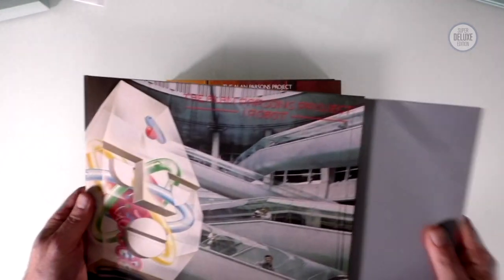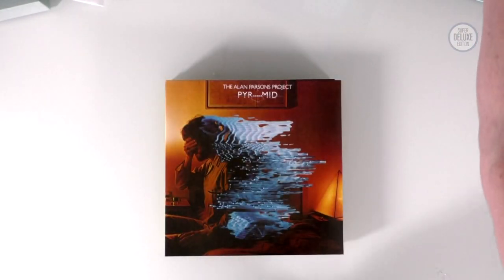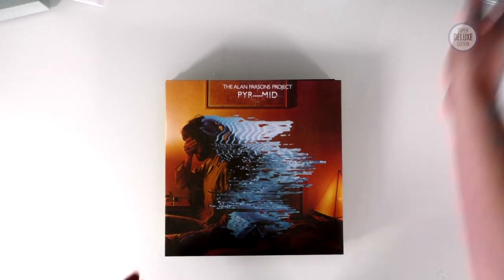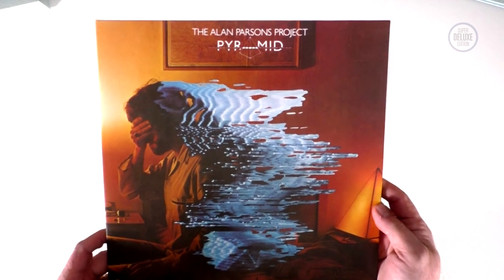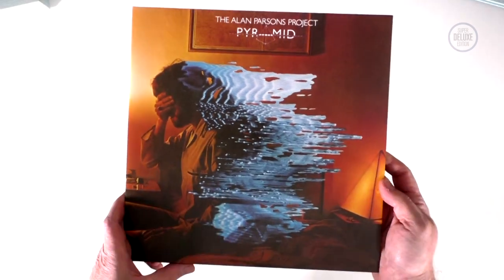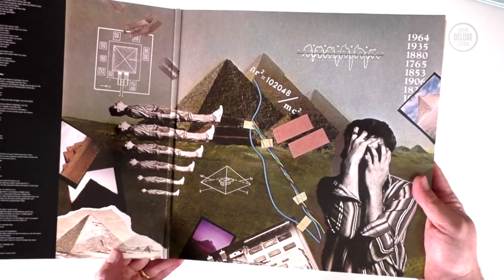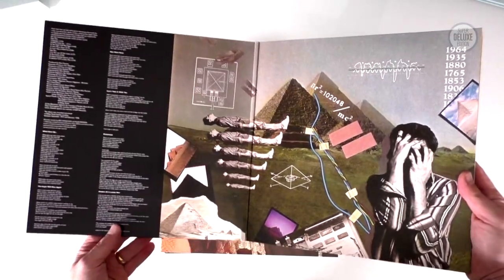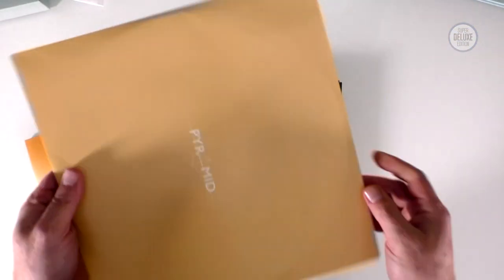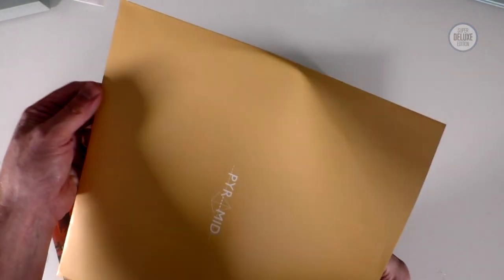They're very productive in the 1970s, the Alan Parsons Project. It was basically an album a year for quite a long time. So the next record is Pyramid. This was from 1978. Again another gatefold and another printed inner sleeve.